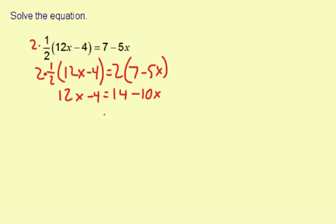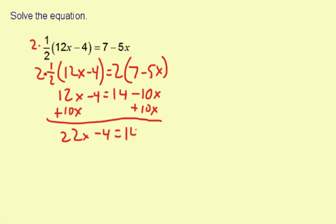Let's take a look. I have 12x here, negative 10x here. We want all the x's on one side. I'm going to add 10x to both sides. So 12x plus 10x is 22x, and then minus 4 equals 14. This will be zero here, so we'll just leave the 14.